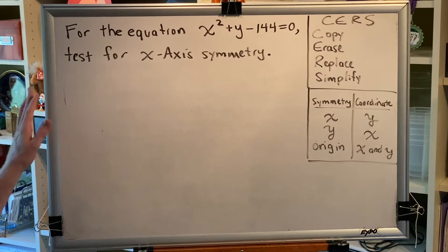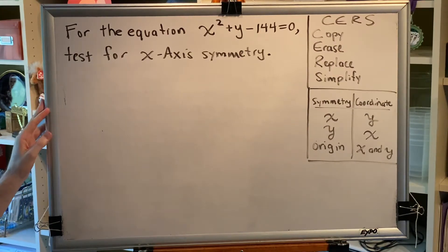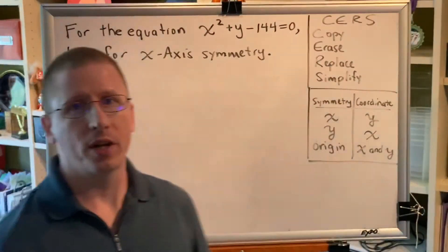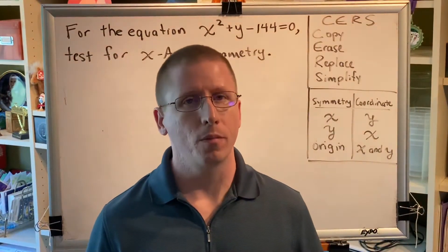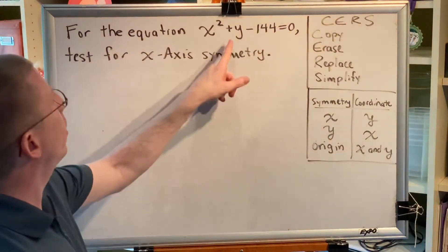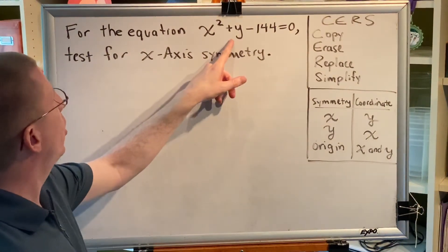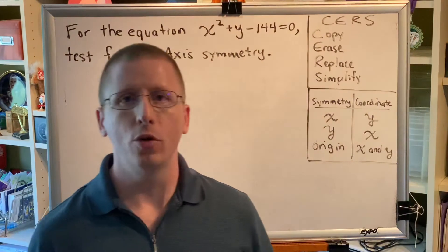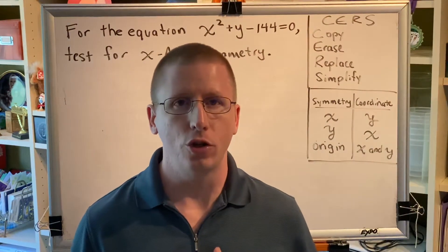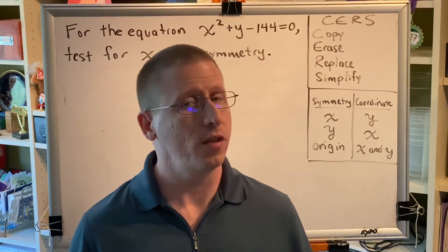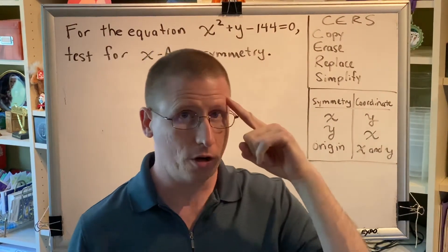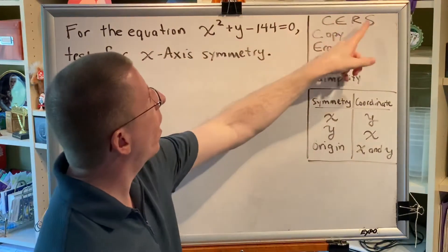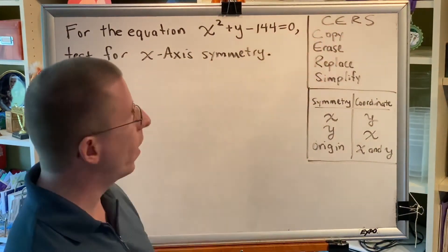For the equation x squared plus y minus 144 equals zero, test for x-axis symmetry. There are two things to keep in mind when we see a problem of this type. First, we're given an equation and asked to test it for symmetry. The process to use is CERS: C-E-R-S — copy, erase, replace, simplify.